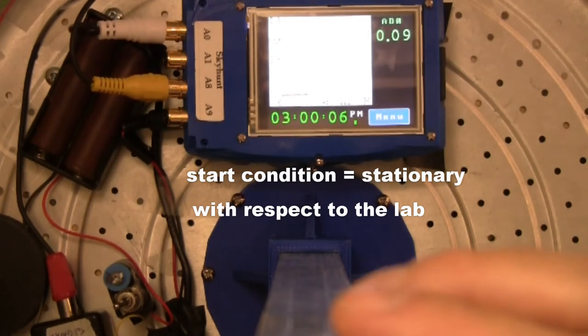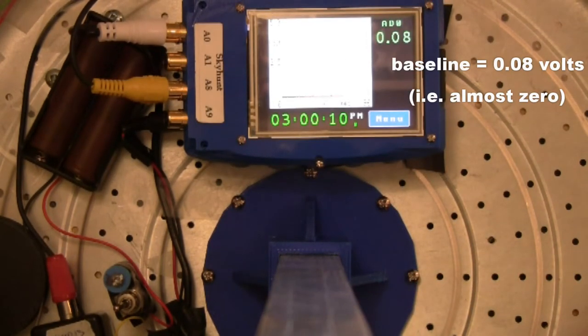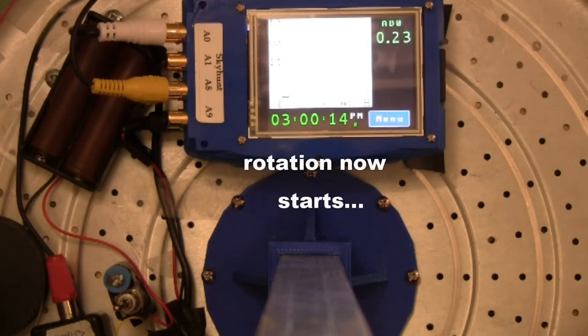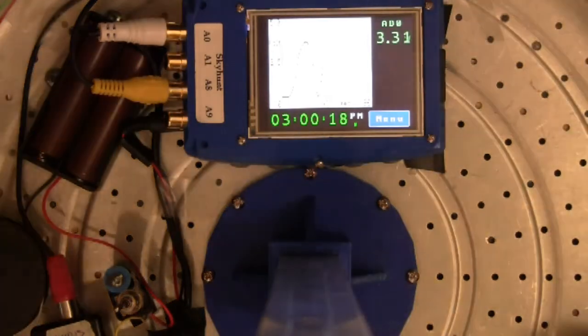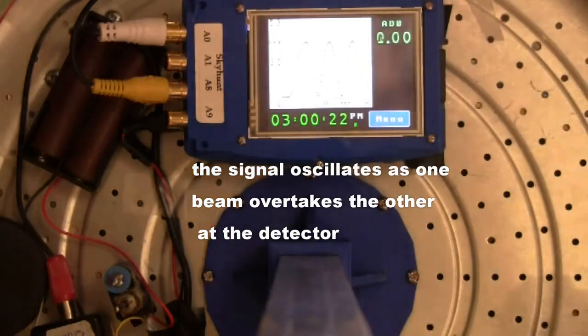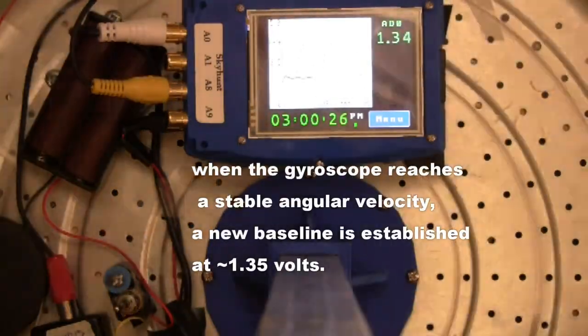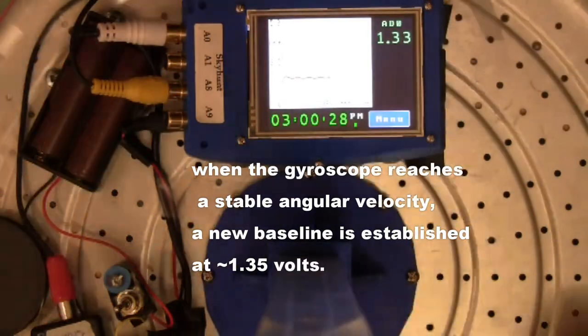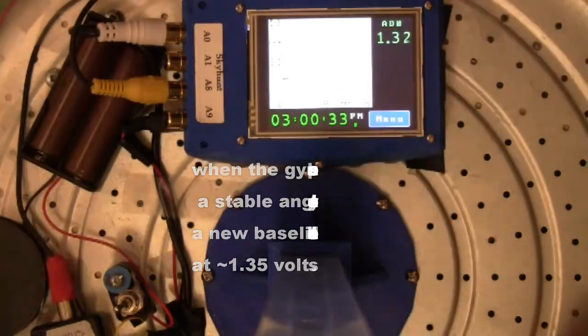The start condition is stationary with respect to the lab. Baseline is 0.08 volts. The signal oscillates as one beam overtakes the other at the detector. When the gyroscope reaches a stable angular velocity, a new baseline is established at about 1.35 volts.